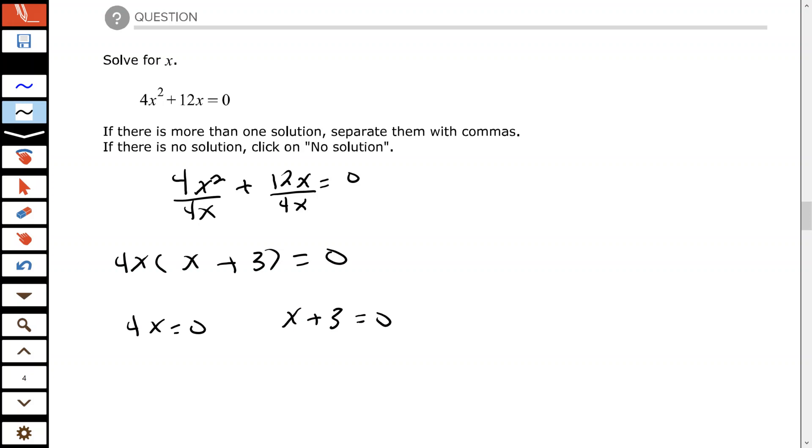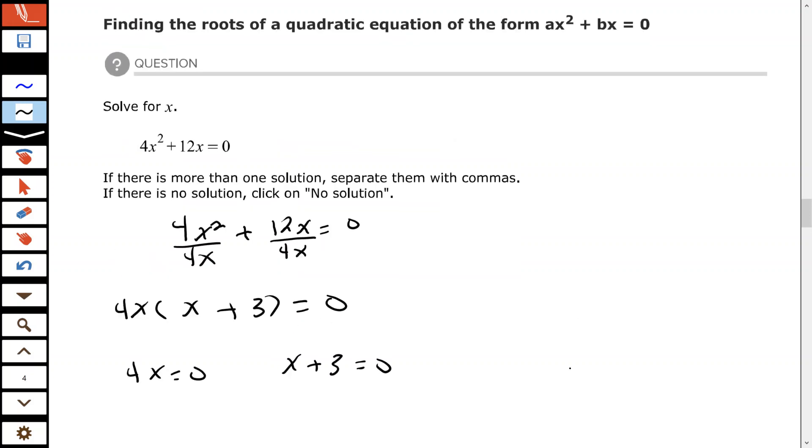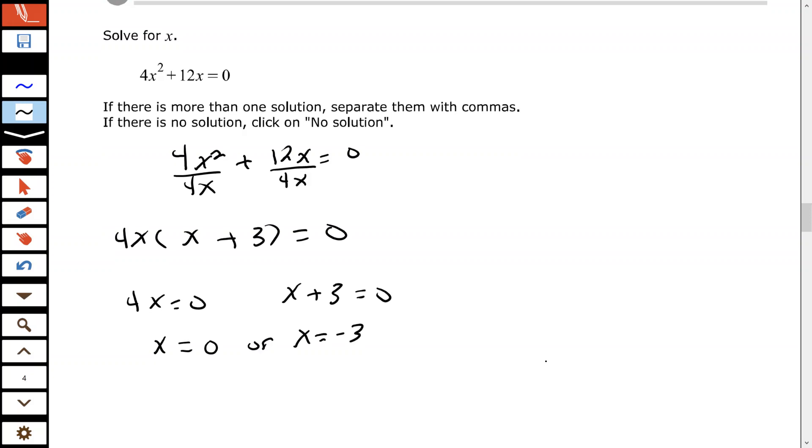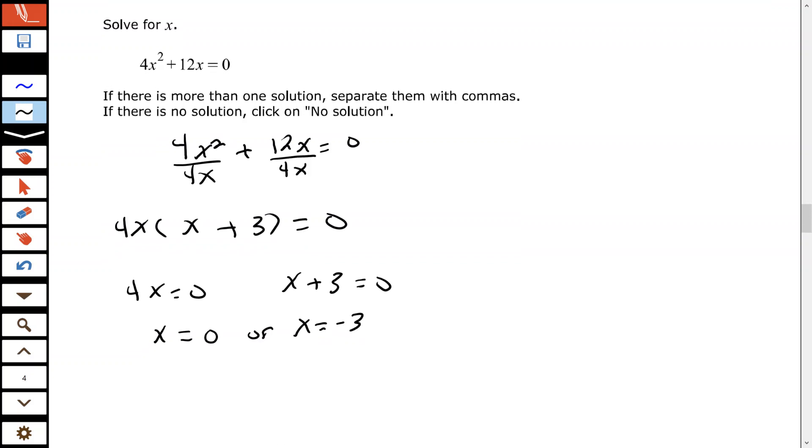And solve, and those would be the roots of the equation of the quadratic equation. So divide both sides by 4, zero divided by anything is zero. Subtract 3 from both sides.